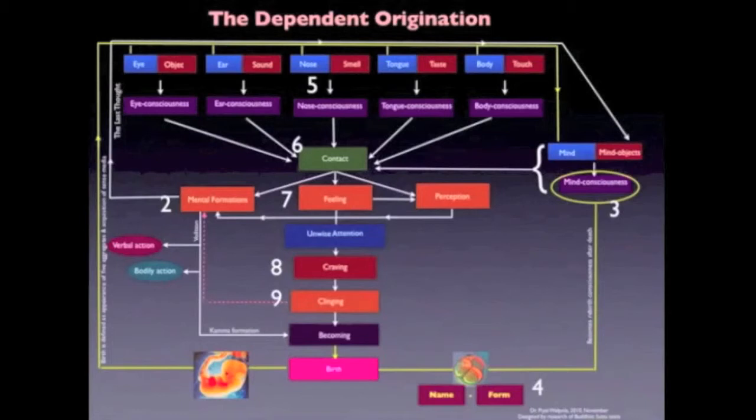Now, notice the dotted arrow coming from clinging, or number nine in our diagram, and moving up into mental formations. And then through intention, which translates into verbal or bodily action, produces karma. And along with the preceding processes, produces becoming.